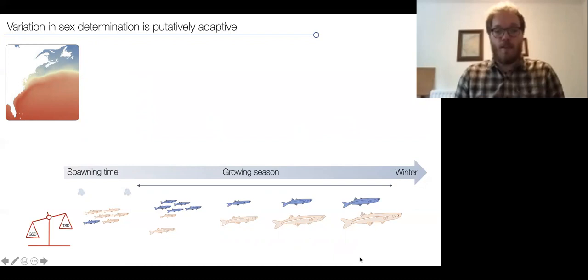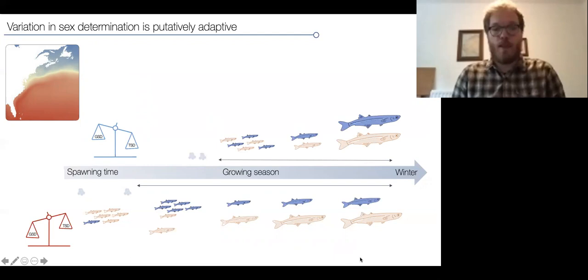Basically, the larger females have a higher fecundity. However, in the north, selection is rather important more for survival. Those populations are mostly genetically determined because both sexes have to hatch at the same time, grow to a decent size by the winter to survive the harsh winters in the northern climates, and then be able to spawn. There's kind of a potential for sexual antagonistic selection, sexual conflicts, like survival versus fecundity in the different sexes.